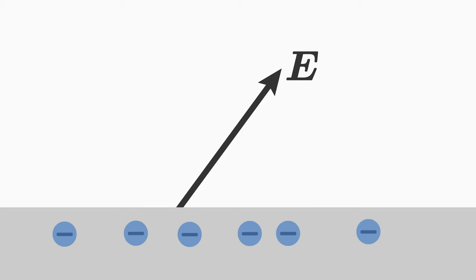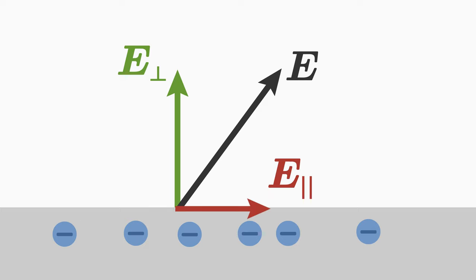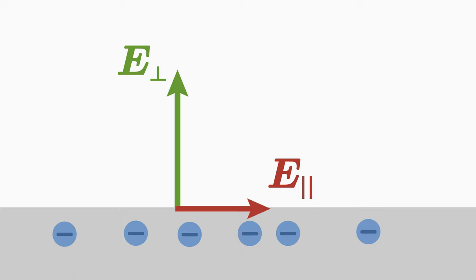Mathematics tells us that we can split any vector, including the electric field vector E, into two components: a component perpendicular to the conductor surface and a component parallel to the conductor surface. The electric field parallel to the surface leads to an electric force on the neighboring electrons, so that these electrons move parallel to the surface.